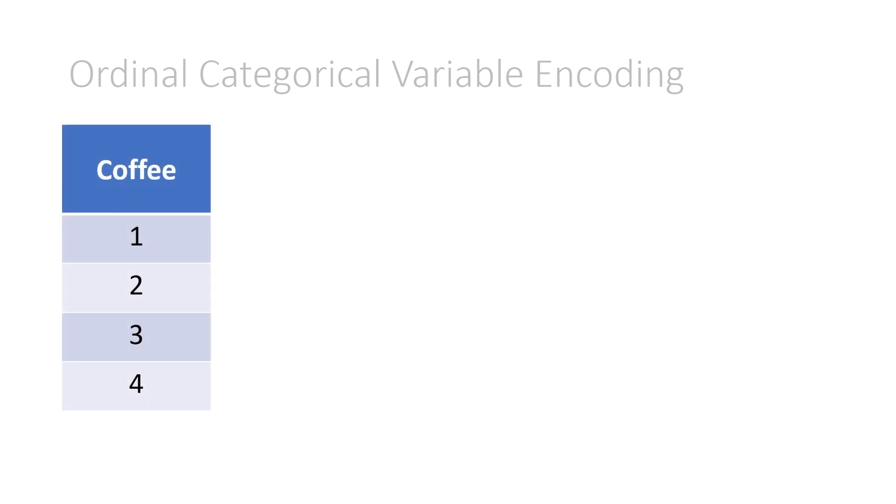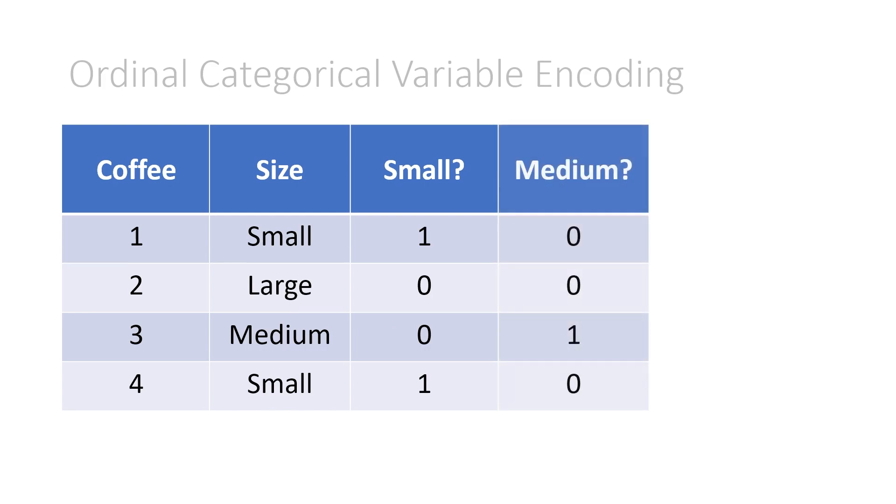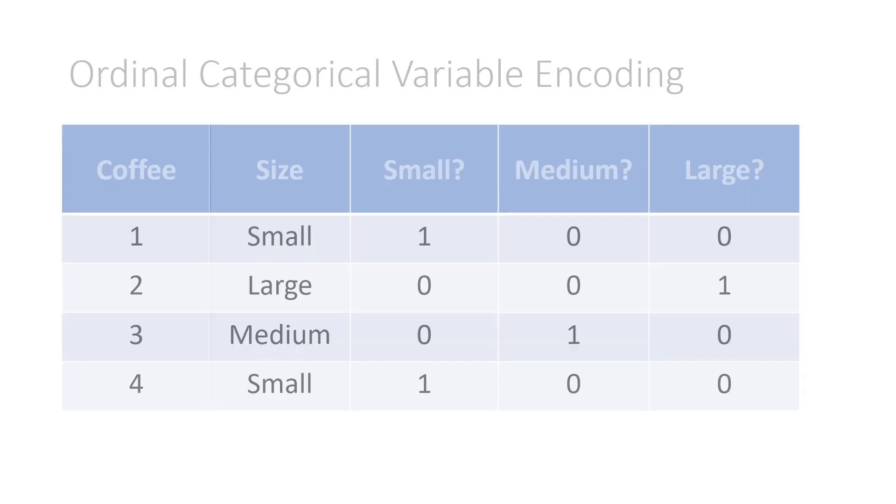So in ordinal categorical variable encoding, you could still use one-hot encoding, because that is done generically for any categorical variable. Maybe we had these four coffees, and we had their size. The first was small, second was large, third was medium, and last was small again. And we would ask our three questions. Is this small, is this medium, or is it large? There is only going to be one correct answer, and so technically this is okay.